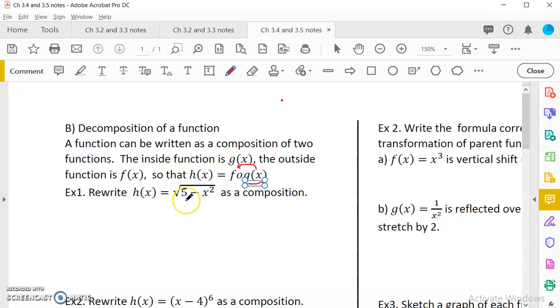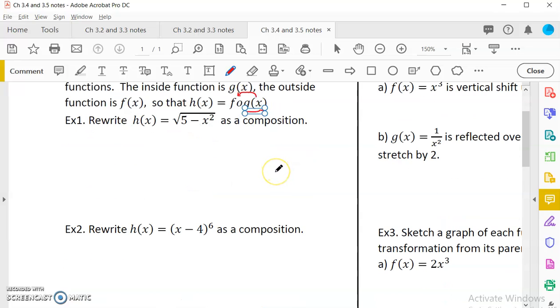So basically we would have the more complex, complicated function, and we want to rewrite it into two functions, so that we can look at it as a composition, and then the g and the f are simpler.